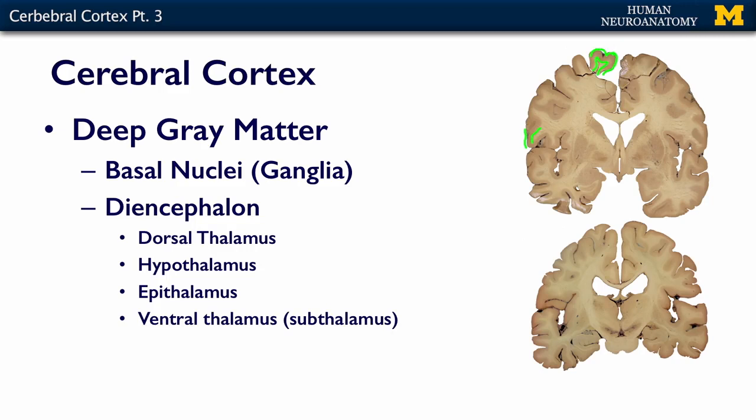Deep to this gray matter is some white matter, and we'll talk about that in a separate lecture. But I also want to talk about some of this other gray matter that's deep within the brain. We talked about our caudate and our putamen and our globus pallidus. These are parts of the basal ganglia.